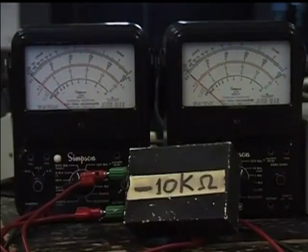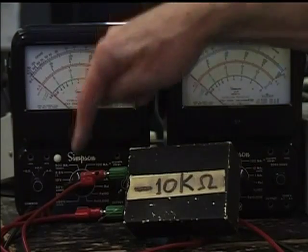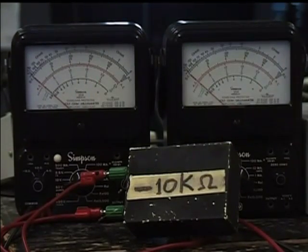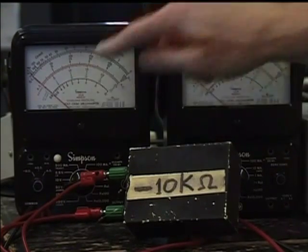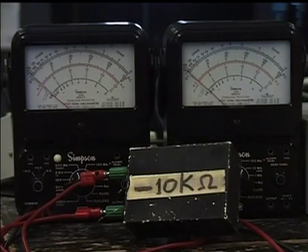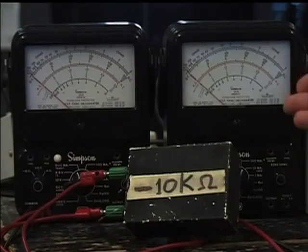Now I've connected the current meter to read the current through the black box, minus 10k. Let's see what happens now as I turn up the voltage. Remember, this is voltage, this is current. Here we go. Oh my. The current went negative when the voltage went positive. Here we are at zero. That's interesting. That really suggests that the sign of the resistance is negative.